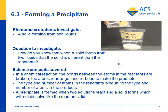In Lesson 6.3, students see a demonstration in which two clear colorless liquids are added and a thick white solid is formed. So the question is, how do you know that when a solid is formed from two liquids, it's different than what was used to make the liquids? Is it different than the reactants? Did a chemical reaction really occur?